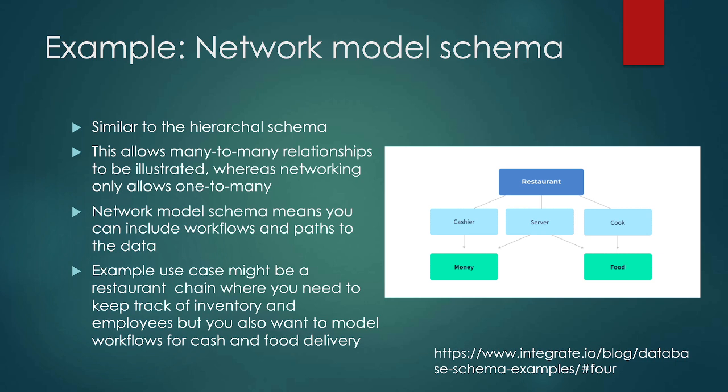A network model schema is similar to the hierarchical schema. However, the network model allows many-to-many relationships, whereas hierarchical schema only allows one-to-many relationships. The network model also allows workflows — basically how you can follow through what's actually happening with some of your data. The example use case here is a restaurant chain: you need to keep track of inventory and employees, but you also want to model workflows for cash and food delivery — figuring out who's actually touching the food, who's touching the money, and how that flows through a database that includes your food list, daily money tracking, servers, and cashiers.